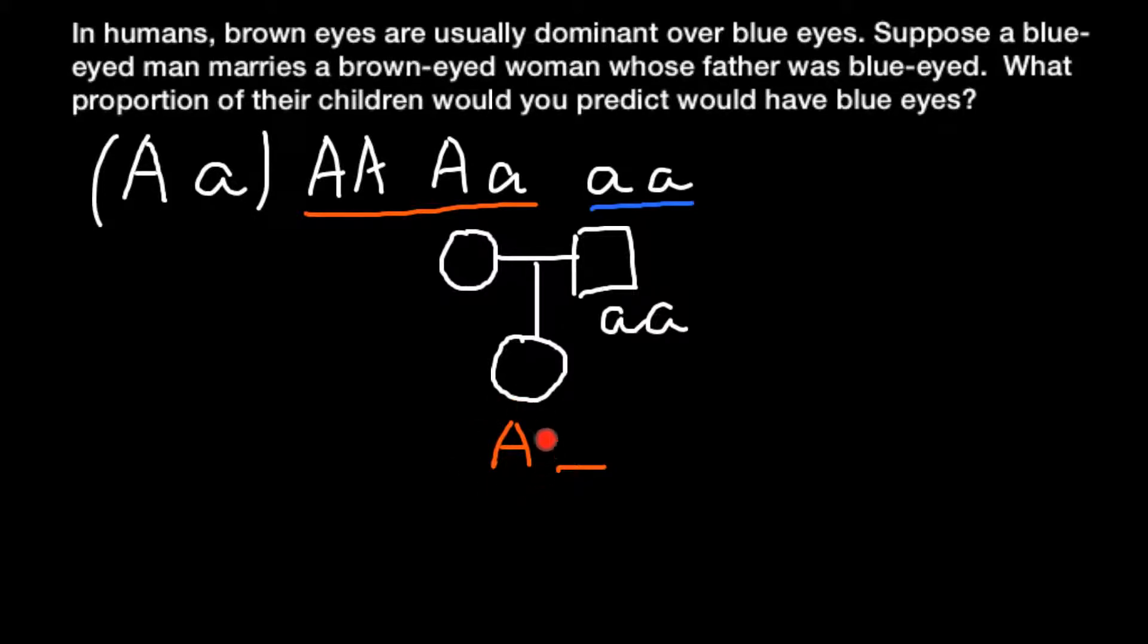We know about her that she at least has to have one dominant allele A in order to be brown-eyed. So her father can only give her this small allele a or this small allele a. There are no other variants. So now we know that her genotype would be capital A, small a. So the female would be heterozygous.